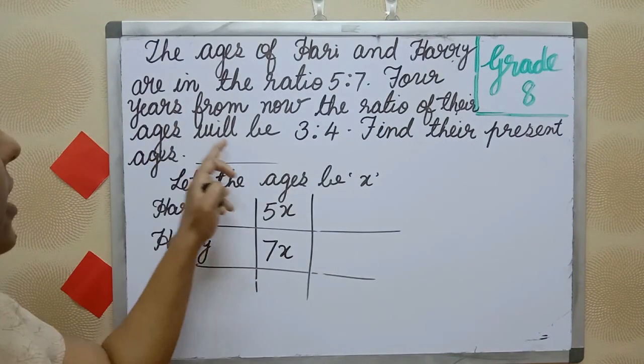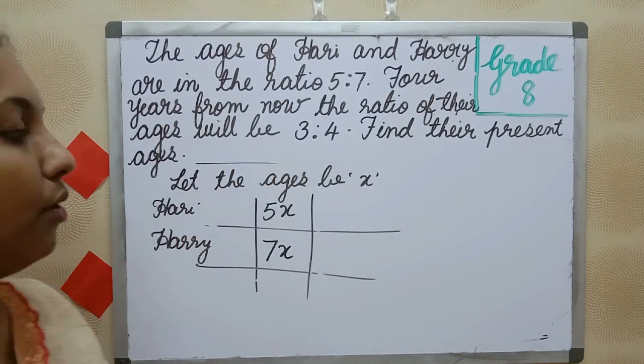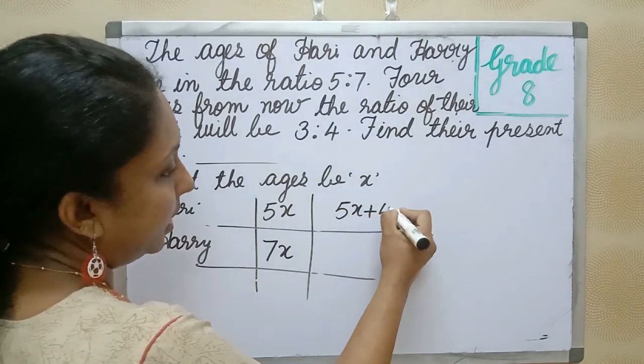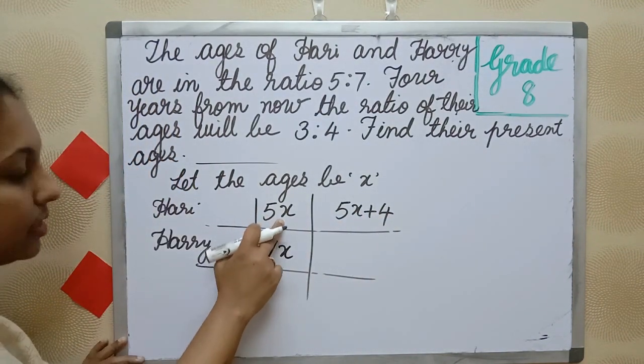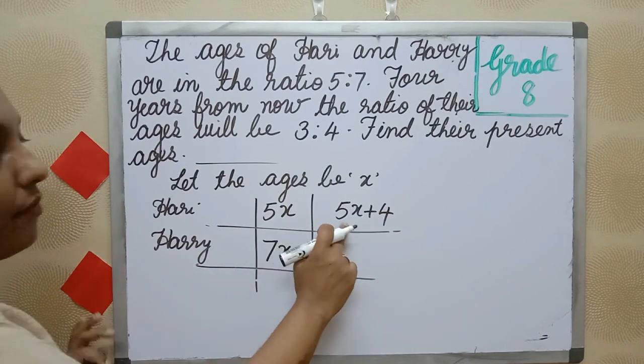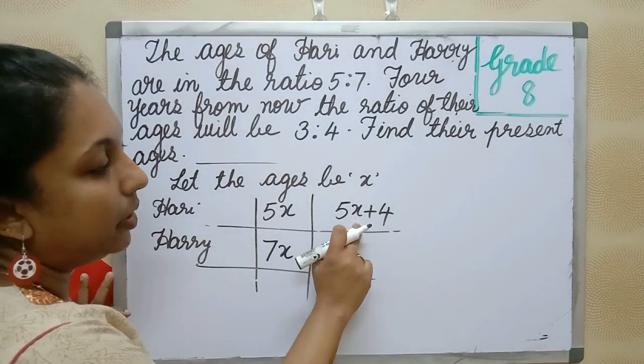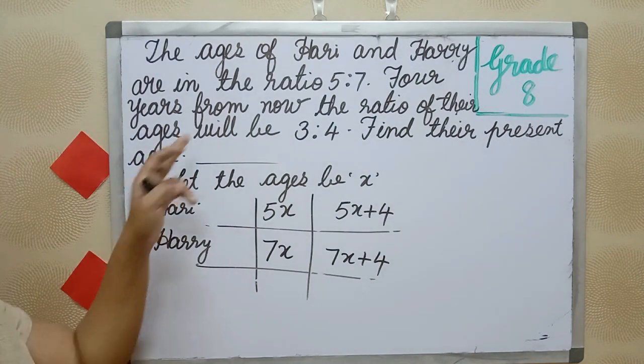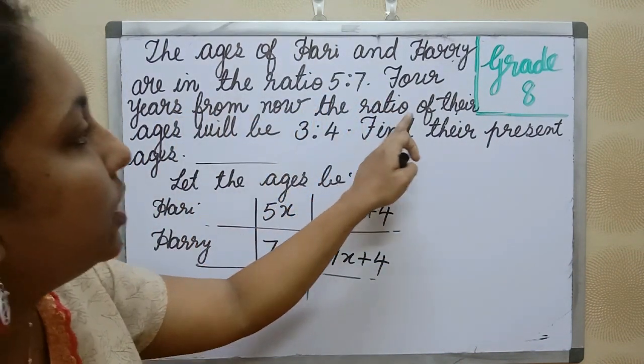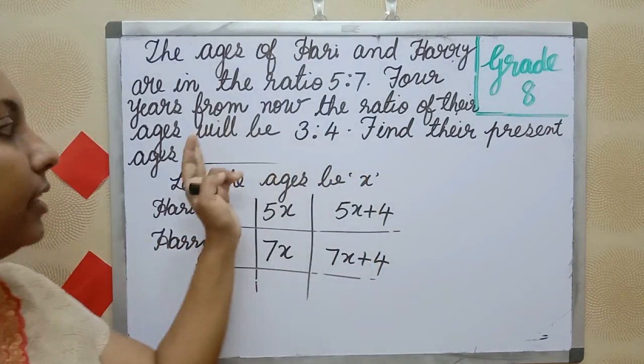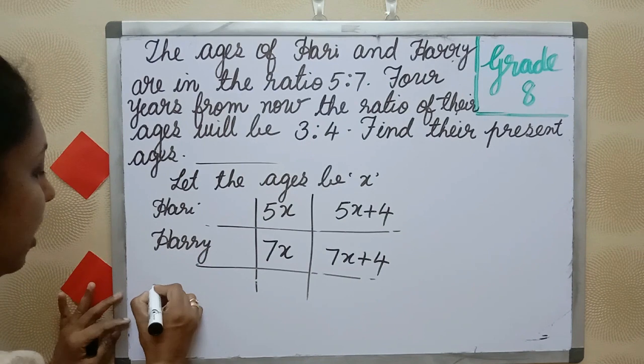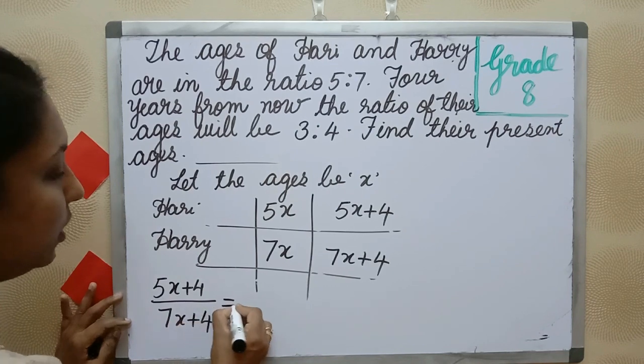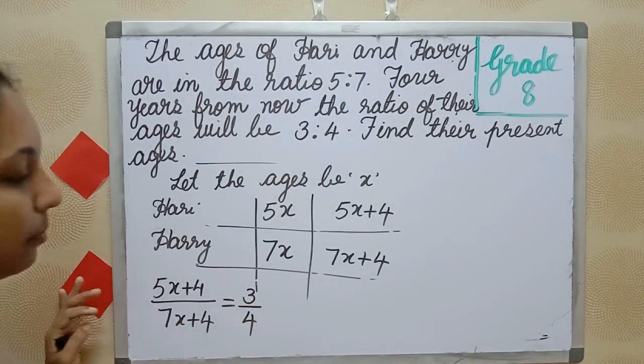Four years from now, the ratio of their ages will be 3 is to 4. After 4 years, Harry's age becomes 5x plus 4 and Harry will be 7x plus 4. The ratio will be 3 is to 4. That means 5x plus 4 divided by 7x plus 4 is equal to 3 divided by 4.